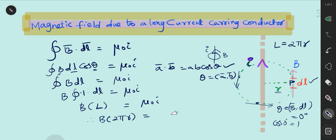B times 2πr equals μ₀I. Finally, we get the magnetic field due to a long current carrying conductor is μ₀I divided by 2πr.